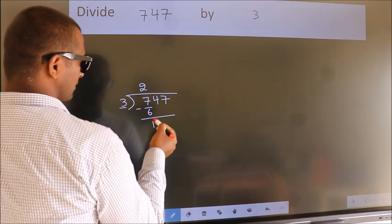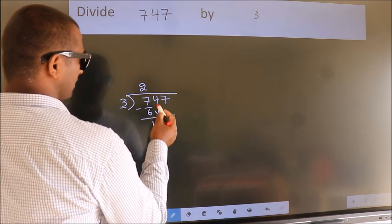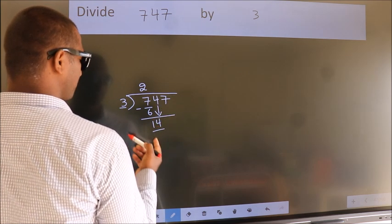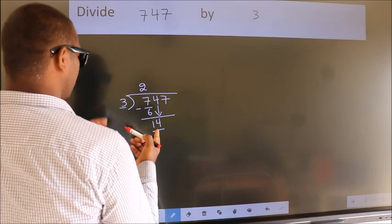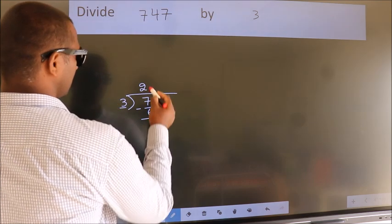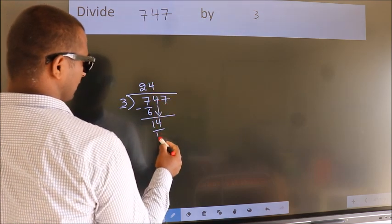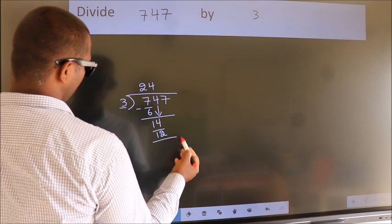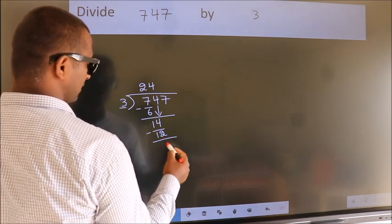After this bring down the beside number. So 4 down. So 14. A number close to 14 in the 3 table is 3 times 4 is 12. Now we subtract. We get 2.